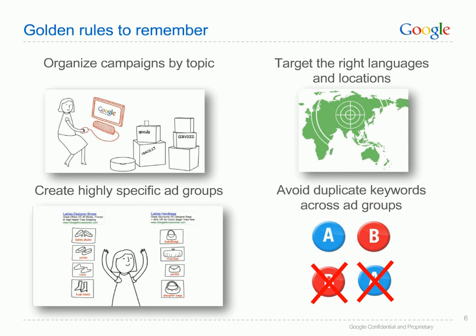Organize your campaigns by topic. A well-structured campaign consists of tightly themed ad groups focusing on just one product or service. Create separate campaigns for each product line, brand or type of service. Each ad group should then contain specific keywords and ad texts that relate directly to that product, brand or service. This will significantly improve the relevance of your ads to Google users' search queries.